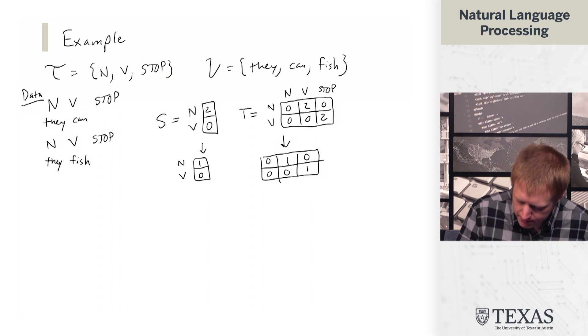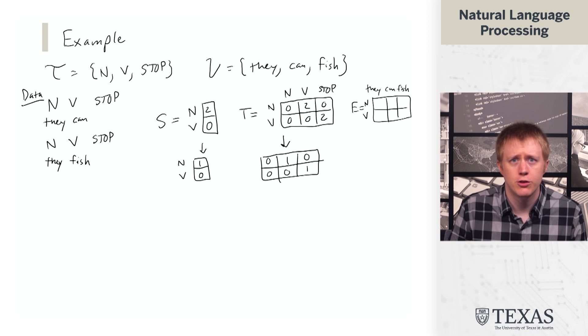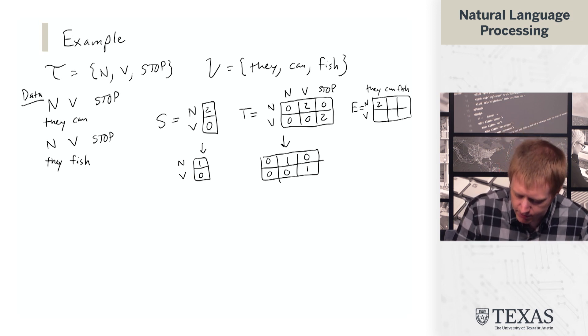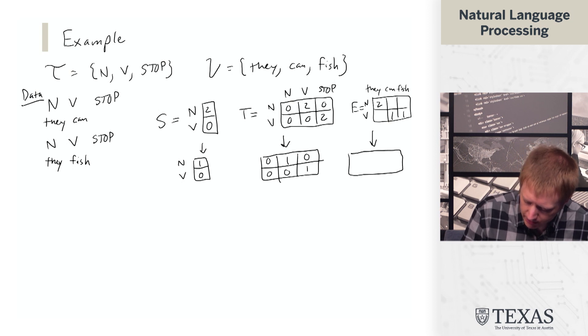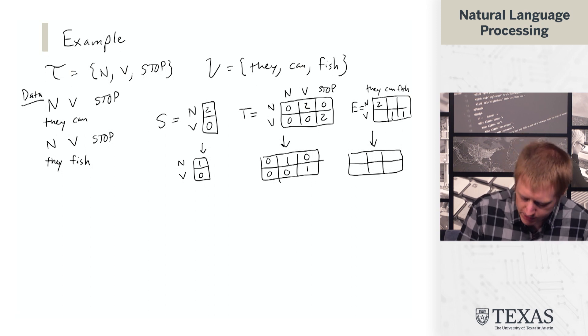And then finally for the emissions. All right, so we have two occurrences of they as nouns, and we have one occurrence of can as a verb and one occurrence of fish as a verb. And so when we normalize this one, we end up with something a little bit more interesting, which is the following.